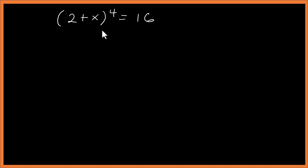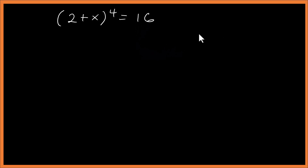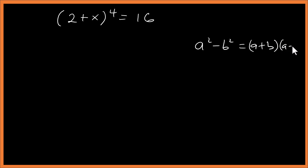Now we know 4 can be written as 2 squared, and the idea is to make use of the difference of two squares, because we can write 16 as 4 squared, and also 16 as 4 squared. When we're given a² minus b², that's the same as (a + b)(a − b).